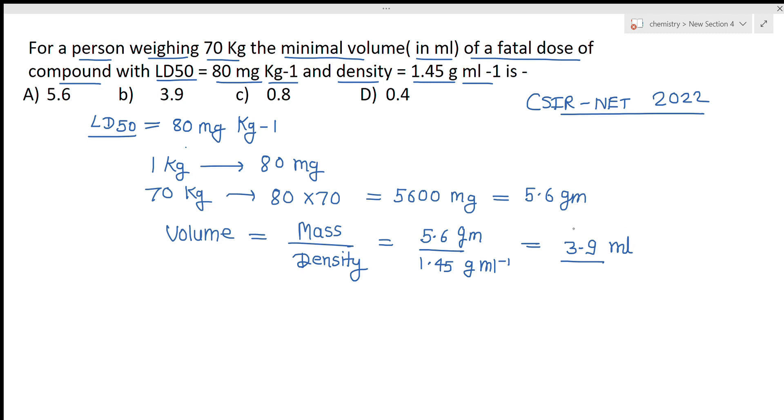So this will be your answer, 3.9 ml. If we are inserting 3.9 ml of this dose to the person then there is a fatality in this person. In this way you have to do the questions. The question is very simple, just you should know the basic things.